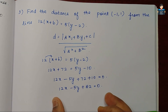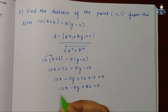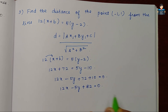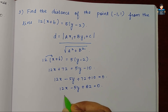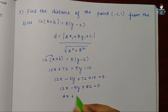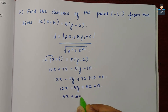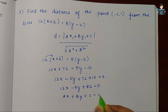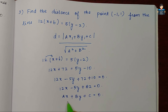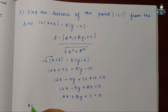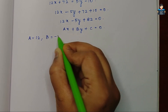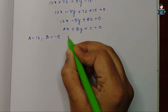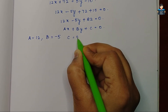So, இப்படி இந்த equation-லிருந்து நம்மளுக்கு a, b, c value-ஐ எடுத்திக்கணும். Standard form of the equation ax plus by plus c is equal to 0. So, a value வந்து 12, b value minus 5 — with the sign-ஓட வந்து எடுத்தினோம் — and c is 82.